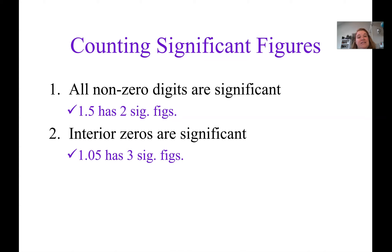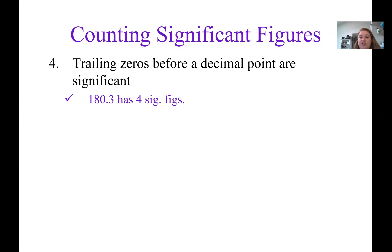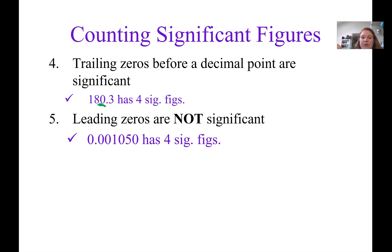Rule two: interior zeros are significant — sometimes called sandwiched zeros. In 1.05, the zero in between is a significant digit. Rule three: trailing zeros after a decimal point are significant. That zero at the very end of a number after the decimal is not there to add size information — it's only there to add precision. Rule four: trailing zeros before a decimal place are significant. That zero is also an interior zero, in front of the decimal, which makes it significant.